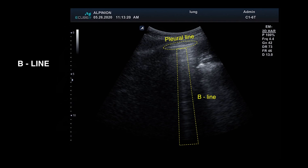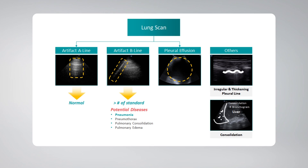As mentioned earlier, lung ultrasound findings in COVID-19 patients include a thickened, irregular pleural line, B-lines, and consolidations.